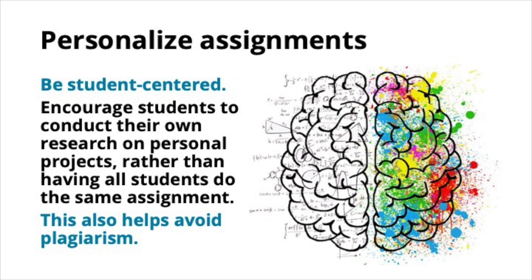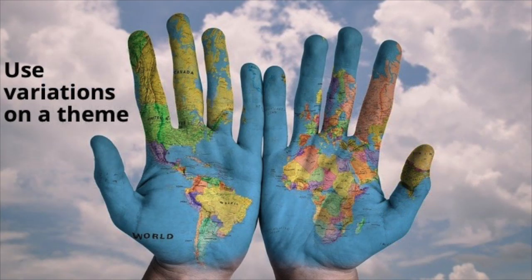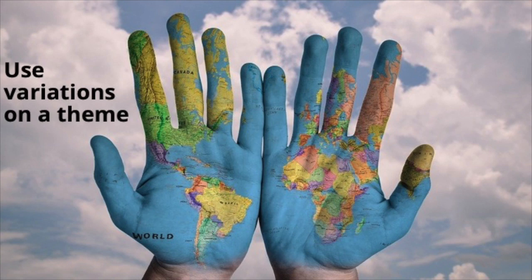You can improve students' motivation by personalizing assignments and personalizing their goals. Make it a more student-centered classroom in which you encourage students to conduct their own research on personal projects, rather than having every single student do the same assignment. This also helps avoid plagiarism. Start with the same assignment but then divide it up — for example, if you were teaching something about culture, ask students to each choose a different culture or a different country around the world. This ensures that everybody is doing something similar but not competing with each other. When they're not competing, they can collaborate and share what they've done, engaging in peer teaching. It benefits everyone, particularly if they're using English to share their ideas.